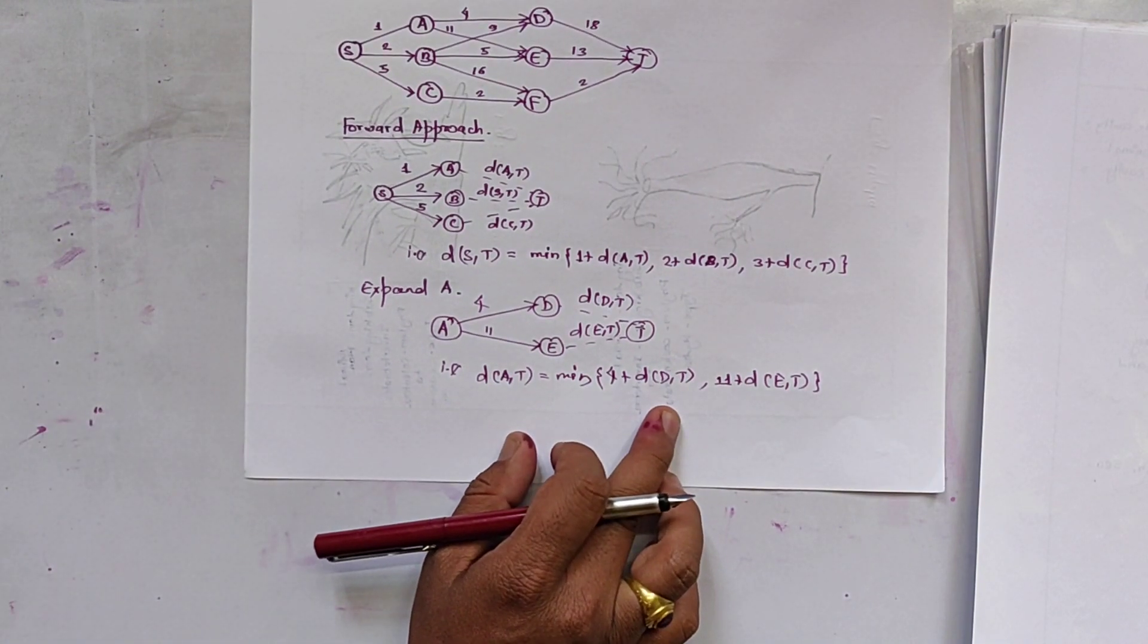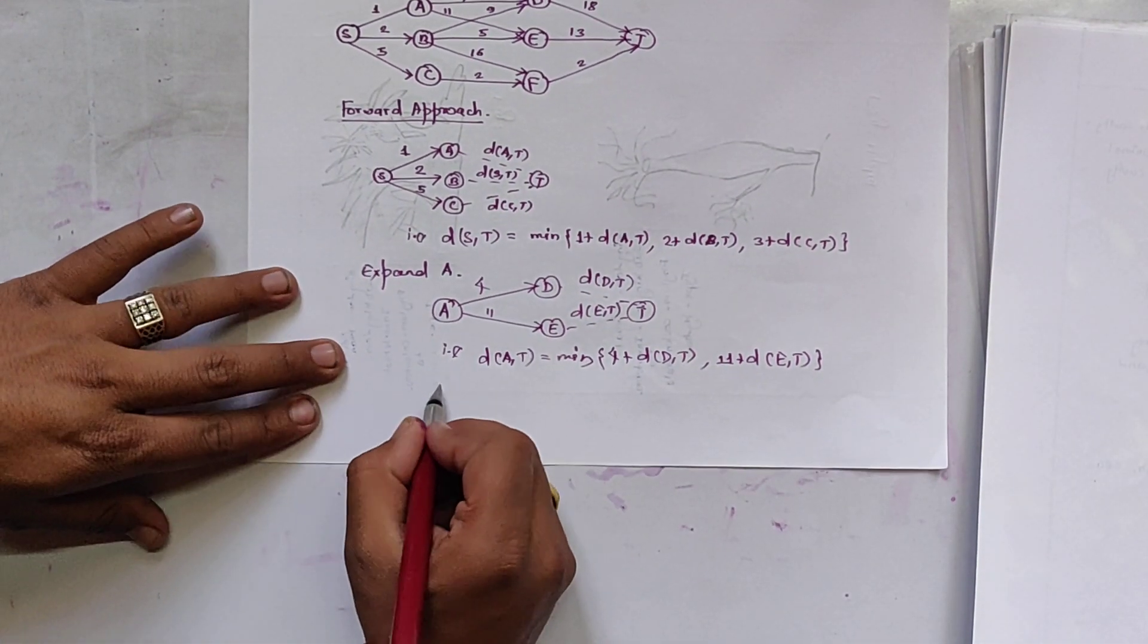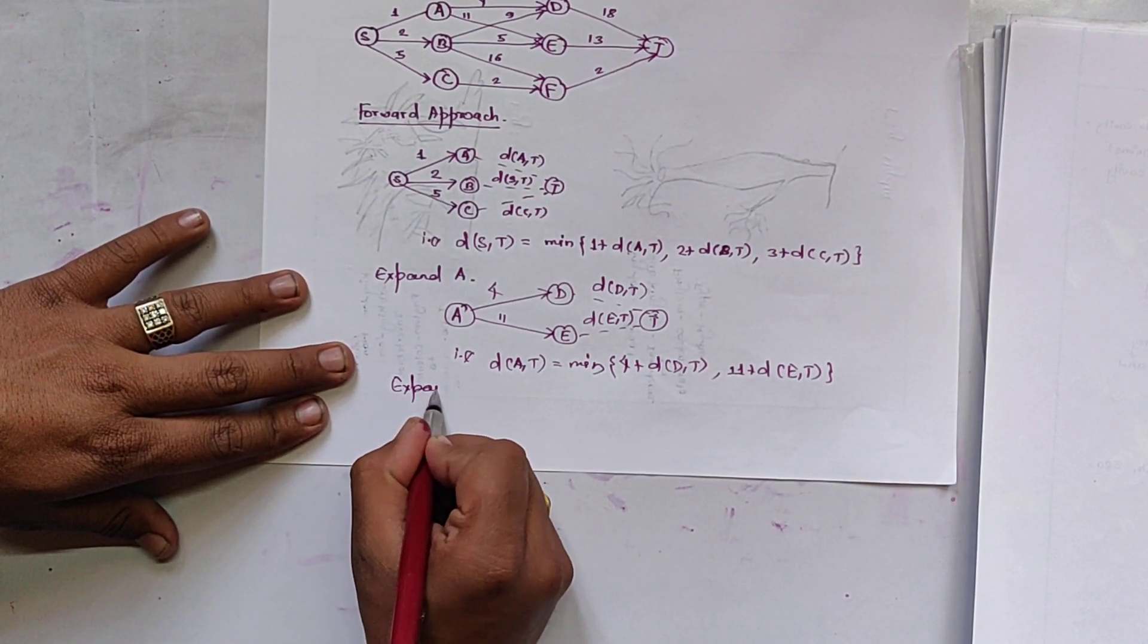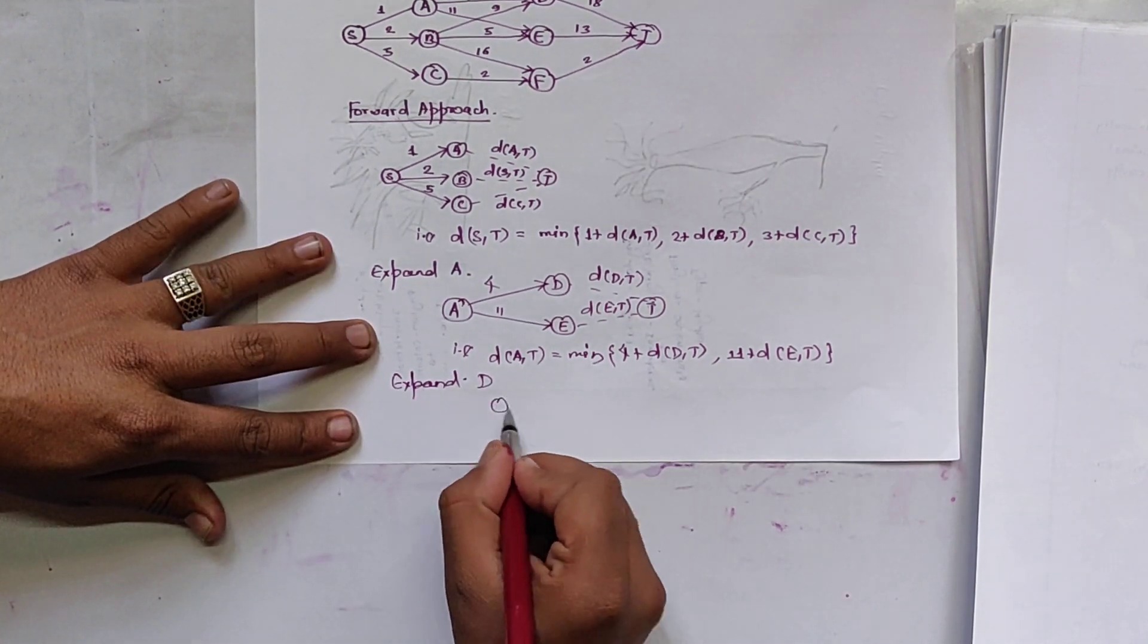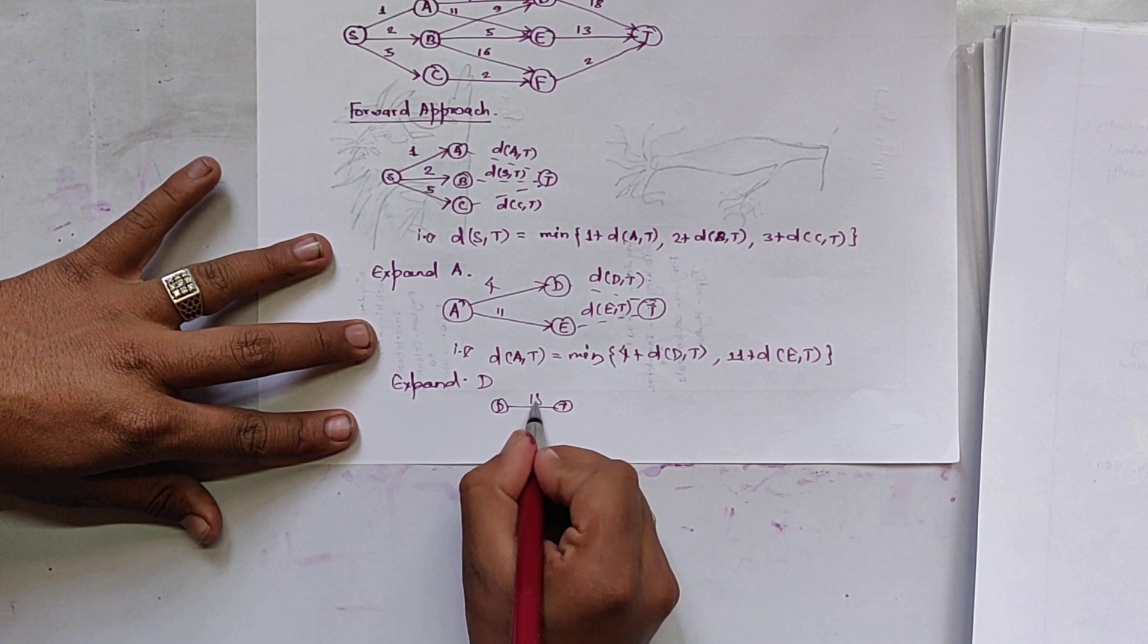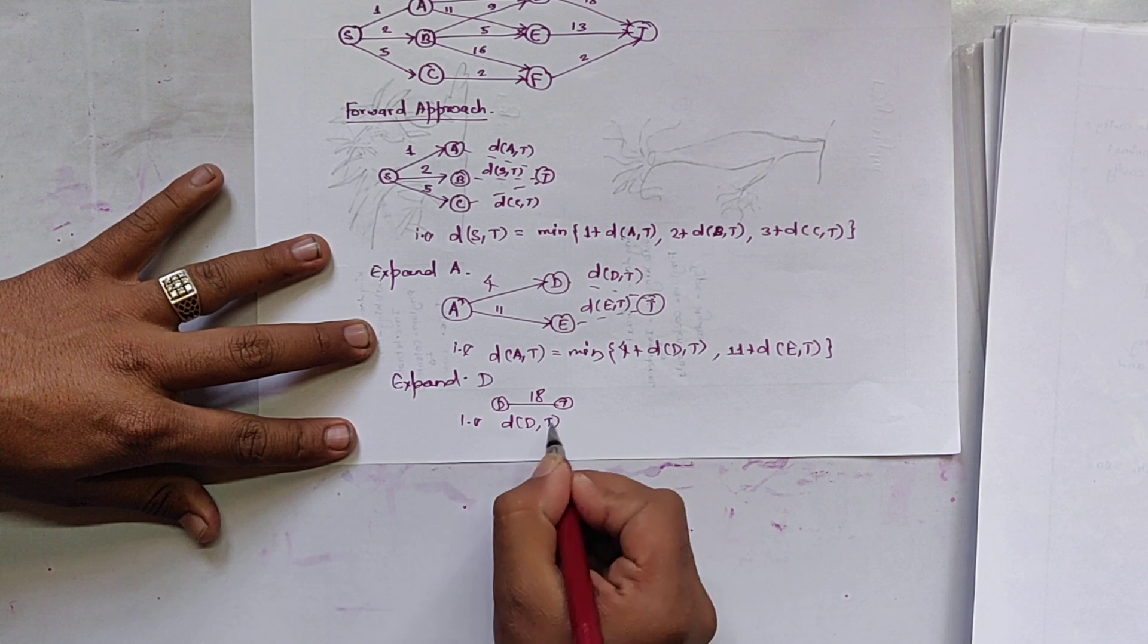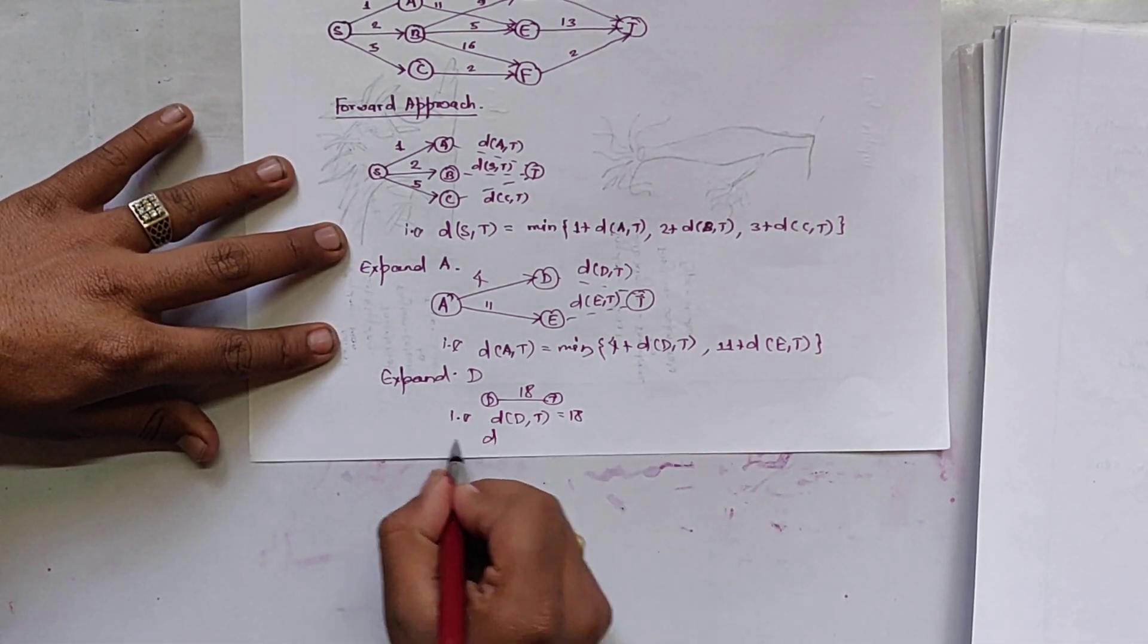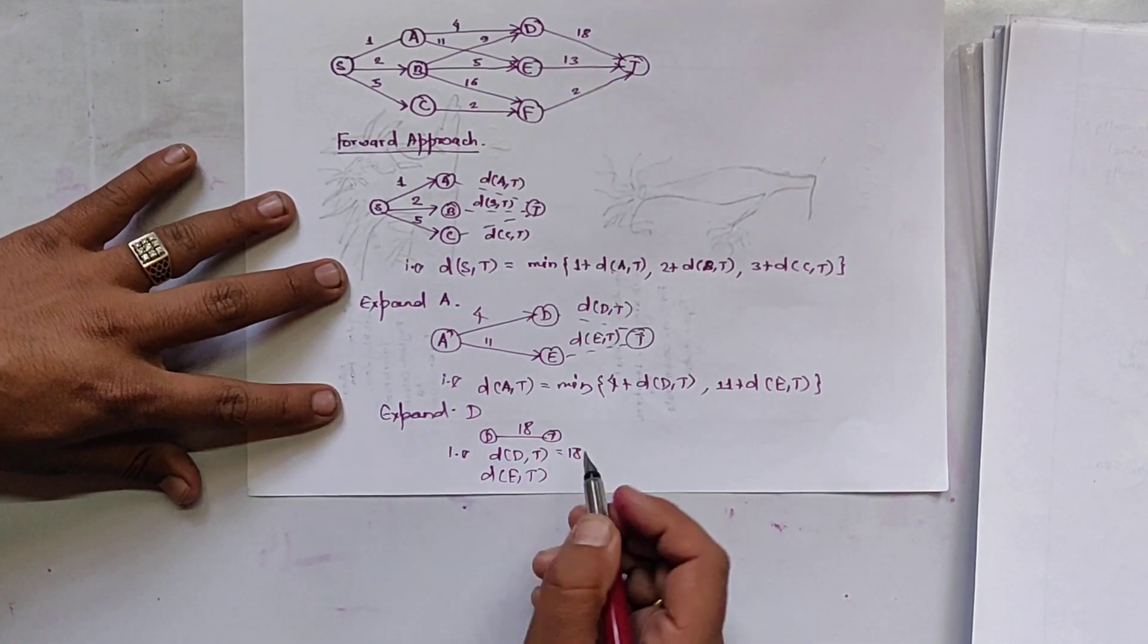So we expand D. And we get D to T directly. That is 18. That is DDT is 18. Similarly, we get DET is 18.